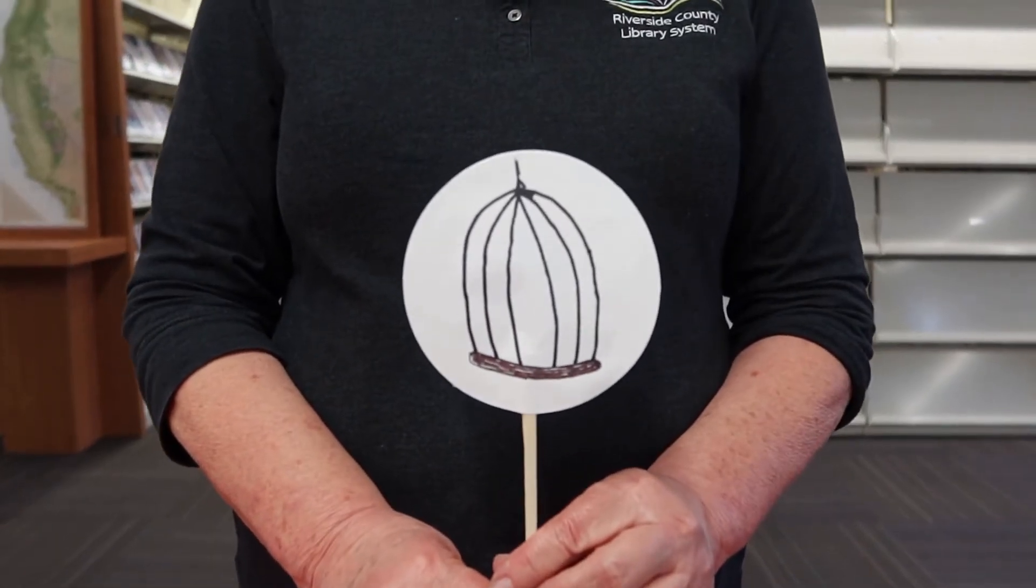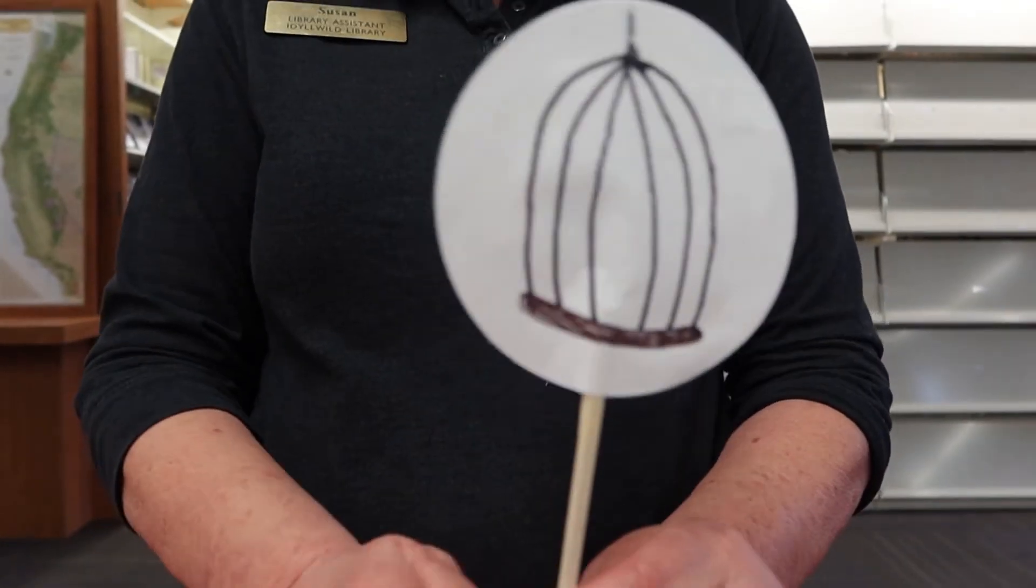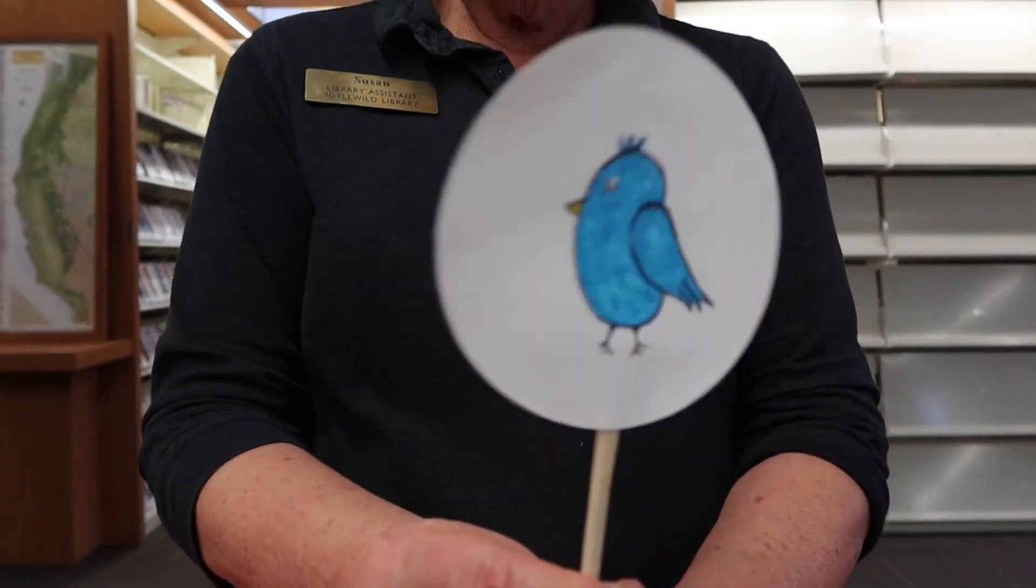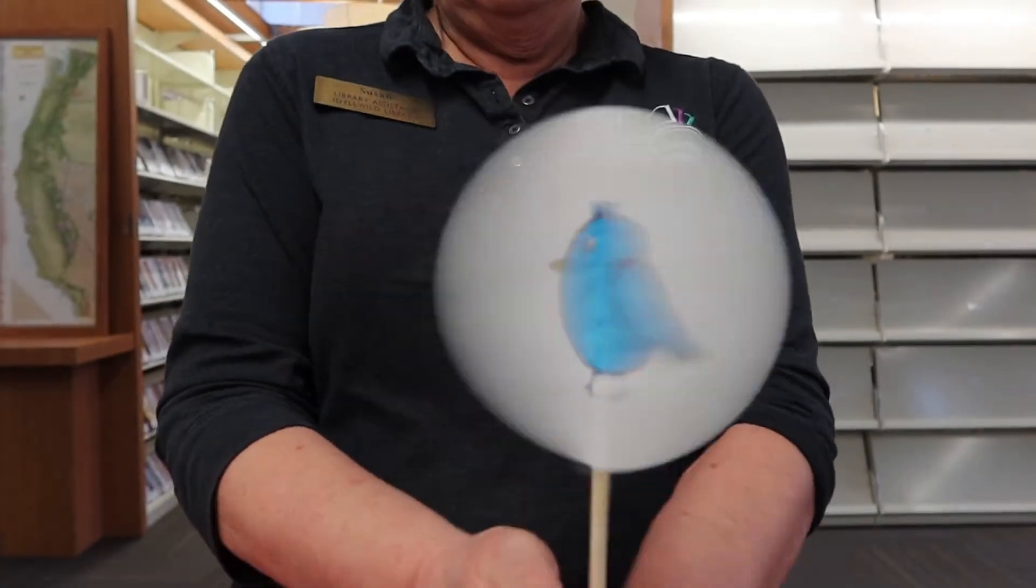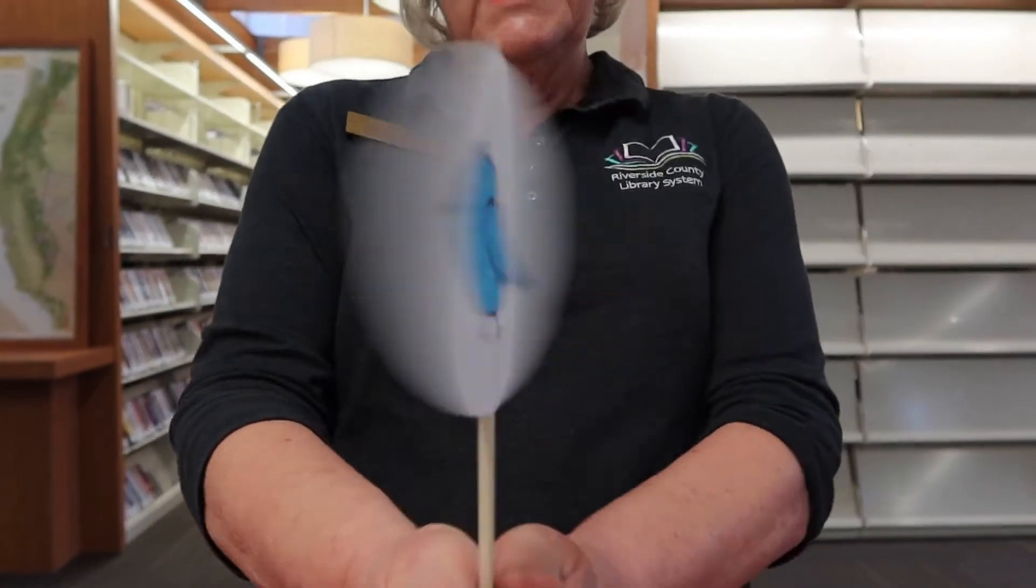So let's get spinning. Let's see how a few of these work. Here is a bird and the bird cage. Can you see how the bird is inside the cage now?